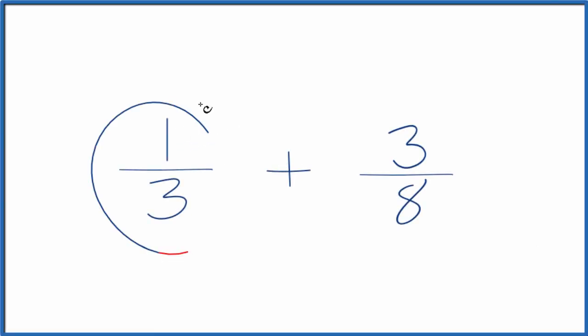Let's add the fractions 1/3 plus 3/8. And here's how we do this. We need to find a denominator. We need to get the same denominator for both fractions. Because once we have the same denominator, when we're adding fractions, we just add the numerators and keep the denominator the same.